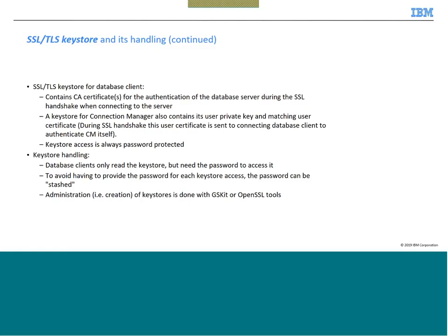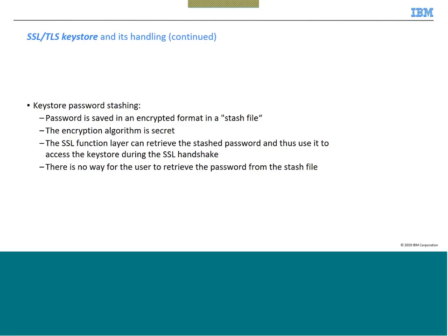To avoid providing a password for every keystore access, the password can be stored in a password file, which is called a stash file. The password is saved in an encrypted format in the stash file. The encryption algorithm is secret and there is no way the user can retrieve that password from the stash file.